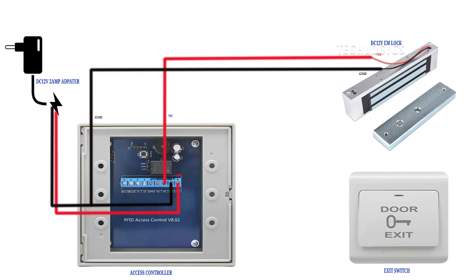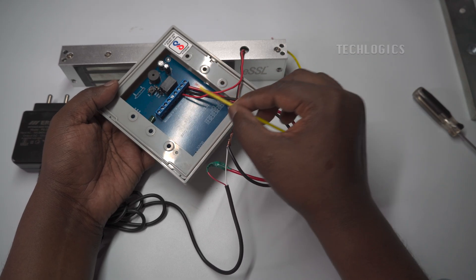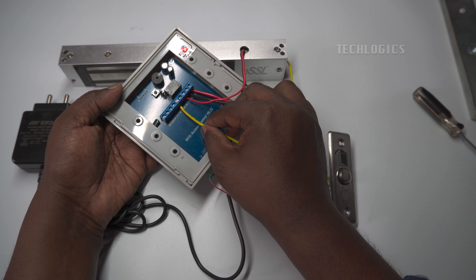Finally, connect the exit switch. This is a push-type exit switch with two terminals. Connect one terminal to the access controller's open terminal and the other terminal of the exit switch to the DC power supply's GND or negative supply wire.